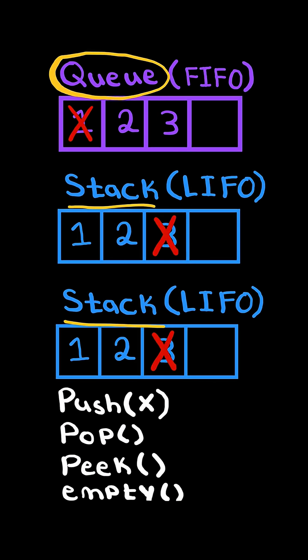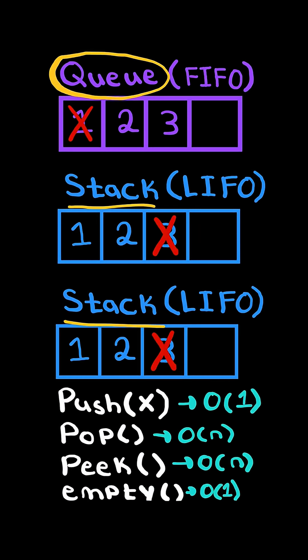We need to implement the following methods: push, pop, peek, and empty. We will implement these methods in the following time complexities.